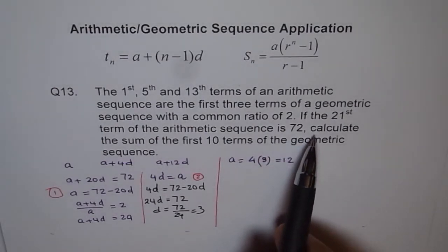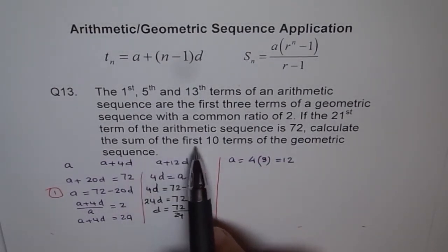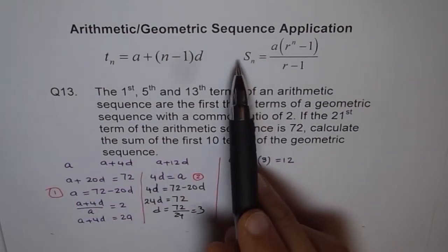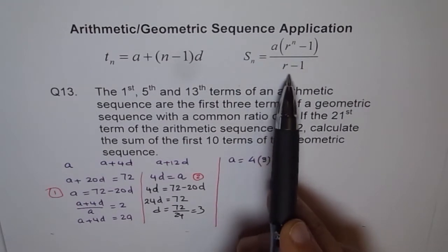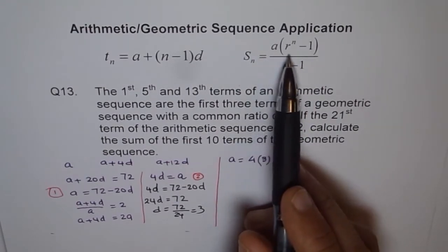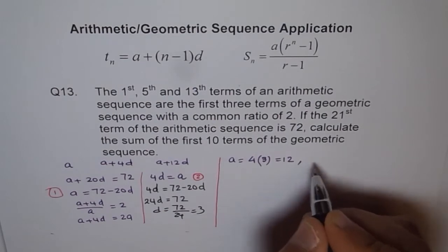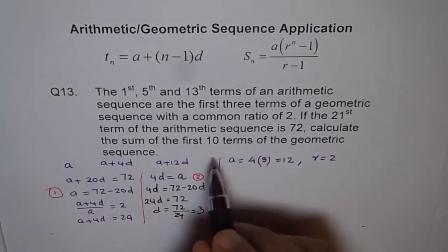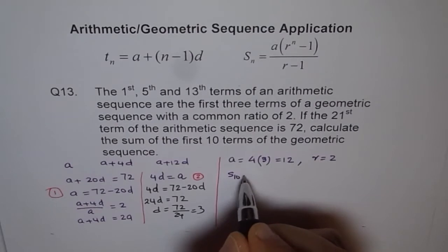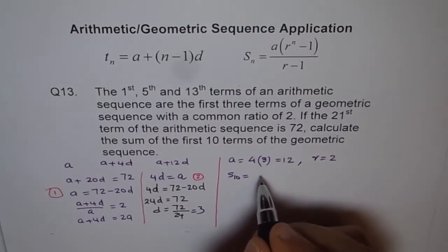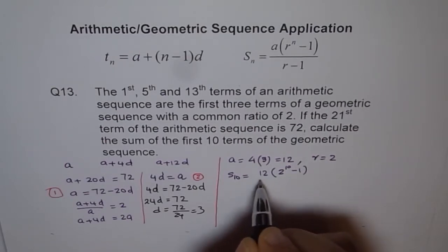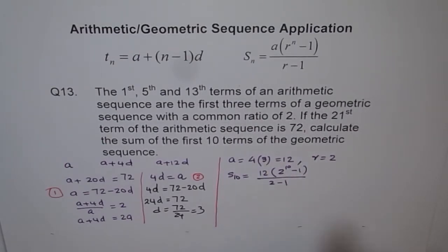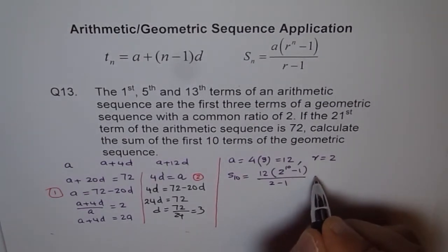Now the last part: calculate the sum of the first 10 terms of the geometric sequence. The formula is Sn equals A times (R to the power of N minus 1) divided by (R minus 1). We know A is 12 and R is 2. So S10 equals 12 times (2 to the power of 10 minus 1) divided by (2 minus 1). Using a calculator, you can always compute this.